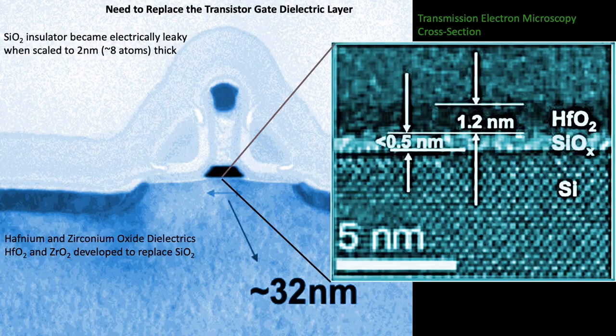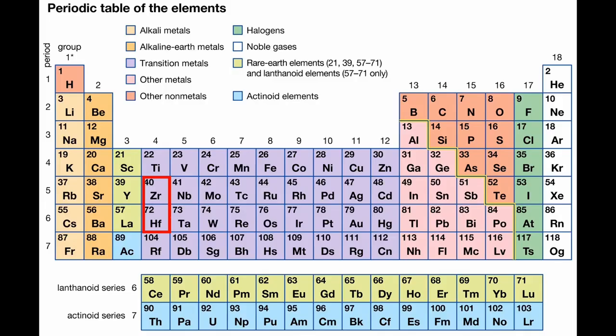We investigated metal oxides — hafnium oxide and zirconium oxide — as replacements for silicon oxide, since they are five times better insulators. But they crystallized, and the electrons can migrate along crystal grain boundaries.